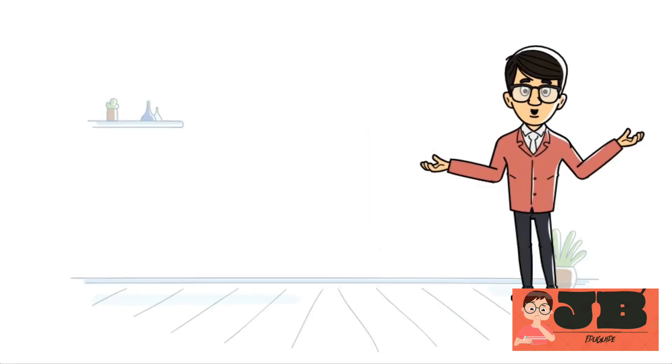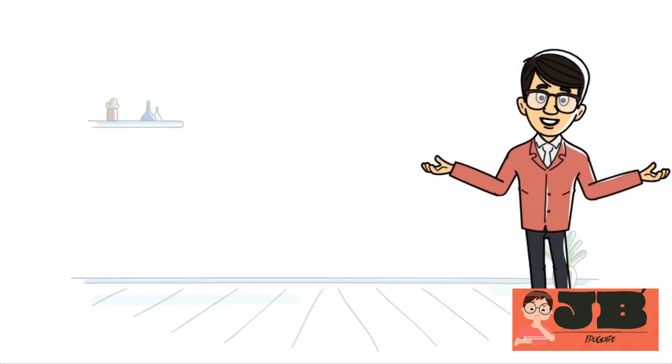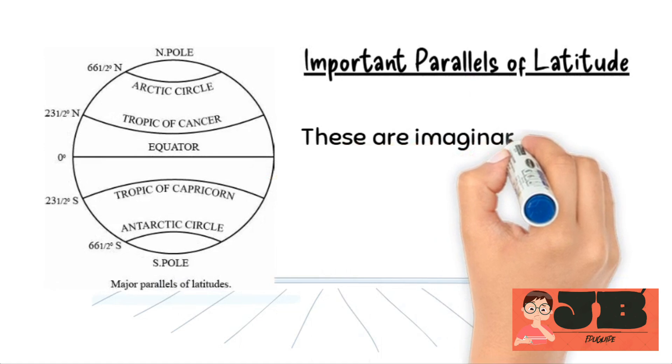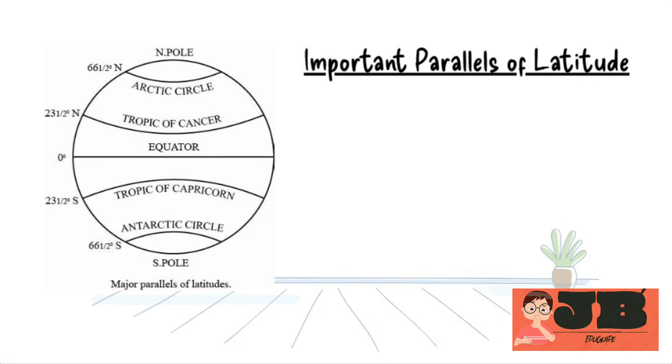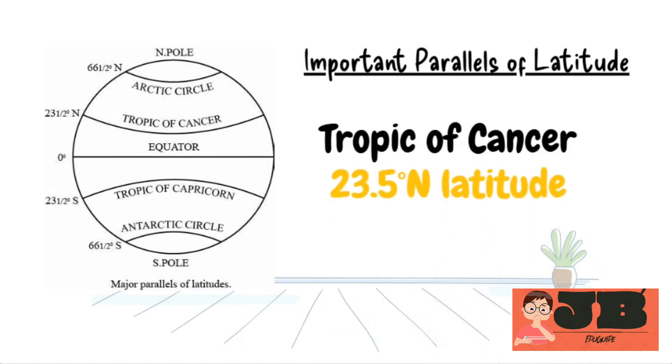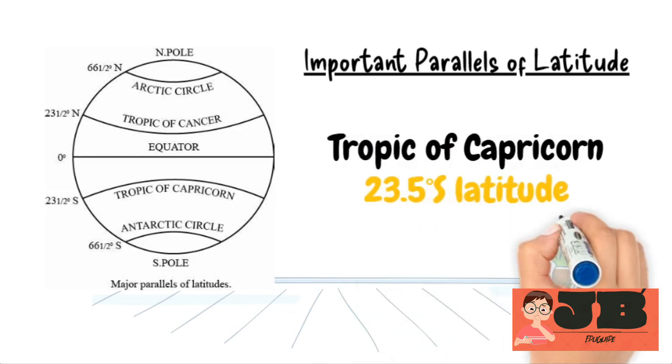Let's understand different parallels of latitude. These are imaginary lines that run parallel to the equator. They measure the distance north or south from the equator. For example, the Tropic of Cancer is at approximately 23.5 degrees north latitude, and the Tropic of Capricorn is at approximately 23.5 degrees south latitude.